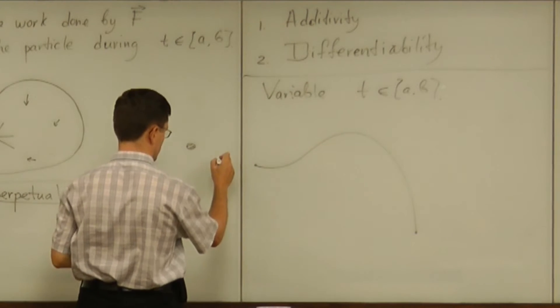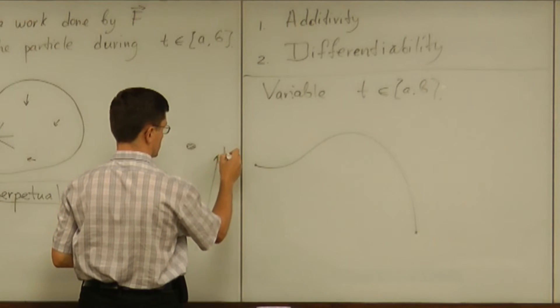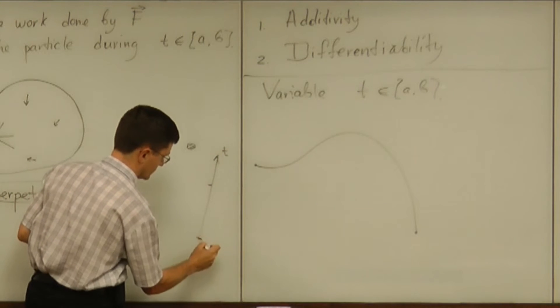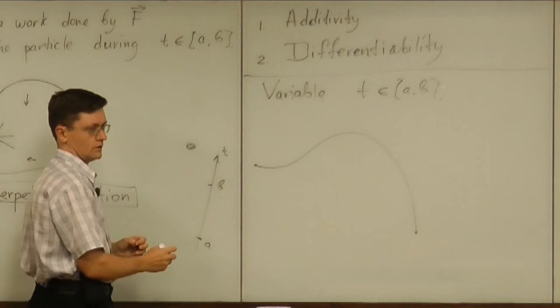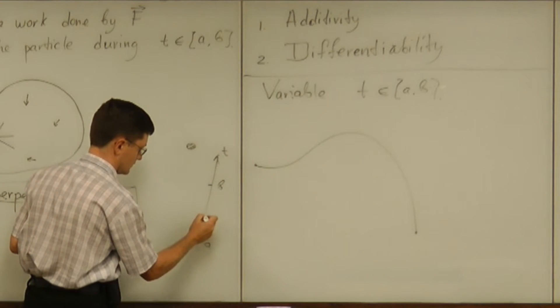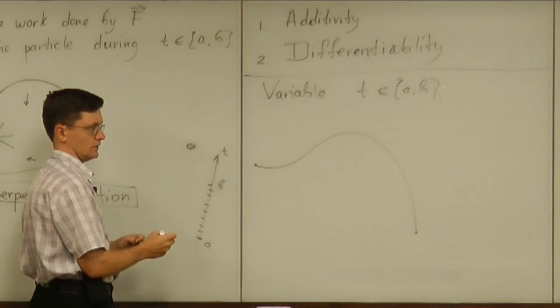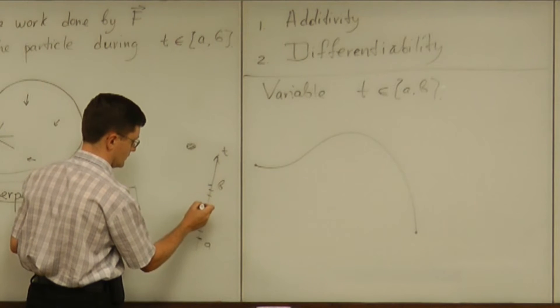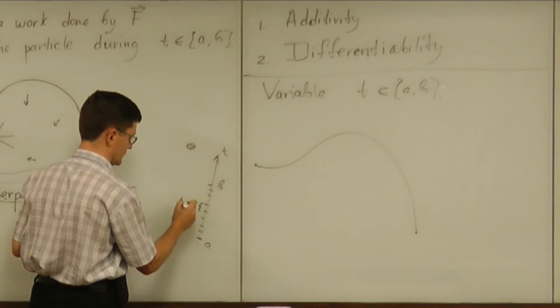So the time exists somewhere on the side. So the timeline and the time changes between a and b. And what we do is we subdivide that time interval into several pieces of the same length delta t.